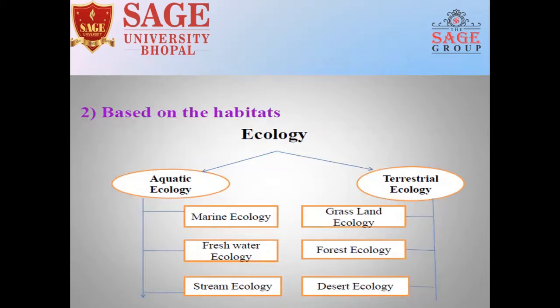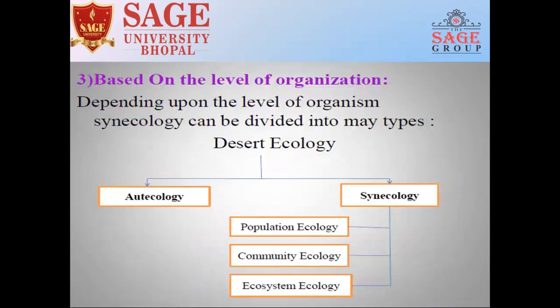In Aquatic Ecology, further classification includes Marine Ecology, Freshwater Ecology, and Stream Ecology. Under Terrestrial Ecology, the classification includes Grassland Ecology, Forest Ecology, and Desert Ecology. Based on the level of organism, Ecology is classified under Autecology and Synecology. Synecology is further classified as Population Ecology, Community Ecology, and Ecosystem Ecology.